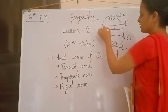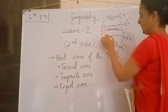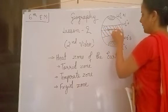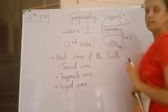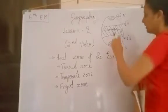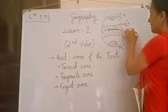This zone is torrid zone. Either you go 23.5 degrees north, or 23.5 degrees south, this is known as torrid zone.